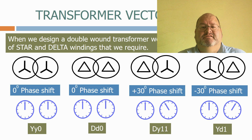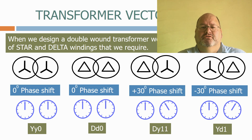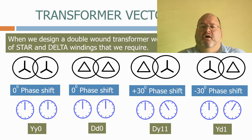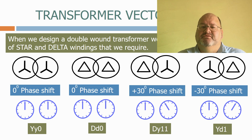Designers take this phase shift into account when they design the electrical network, to ensure that the voltages that appear at each voltage level in their network always have the same phase angle. Trying to join two networks with a 30-degrees phase shift would be blocked by the synchronizing relay on the circuit breaker.